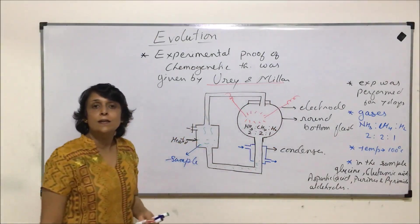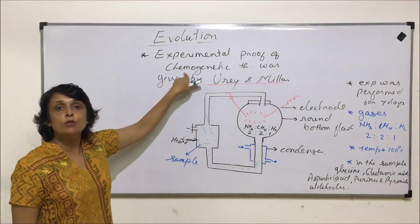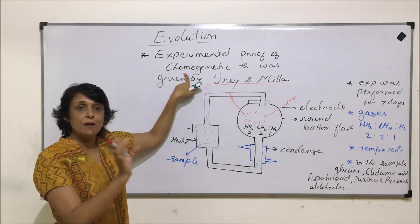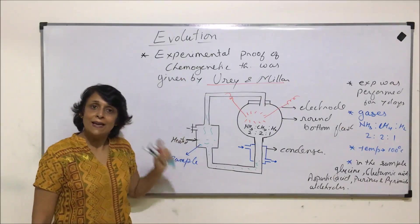So this experiment of Urey and Miller is considered as the experimental proof of the chemogenetic theory, and out of which the chemogeny part which was given by Operin and Helden.